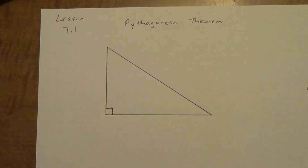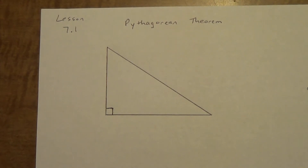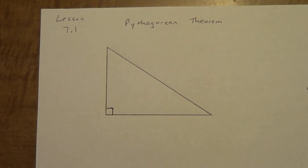Alright, so here we are again. This is Lesson 7.1 — the Pythagorean Theorem. We've already talked about and used the Pythagorean Theorem this year. We're just going to make things a little bit harder today and take a look at one new concept that deals with the Pythagorean Theorem.